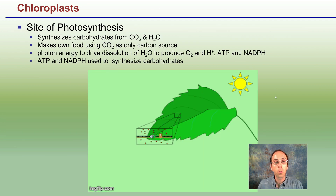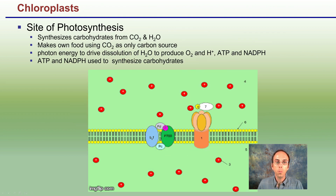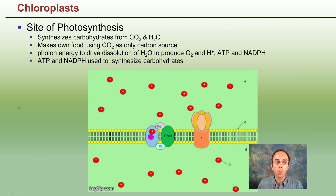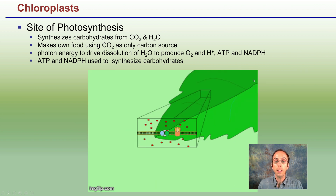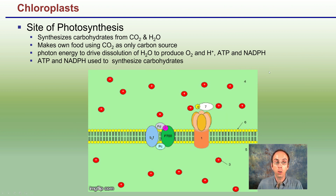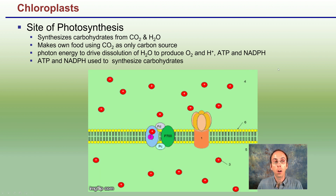At the site of photosynthesis, carbohydrates are formed from carbon dioxide and water — the cell making its own food. Photon energy, this light energy, drives the breakdown of water, producing oxygen. The resulting hydrogen ions are ultimately used to produce ATP and NADPH, both energy molecules, which are then used to synthesize carbohydrates.